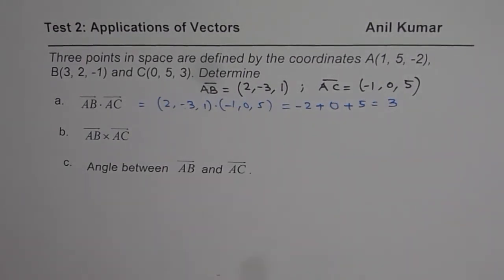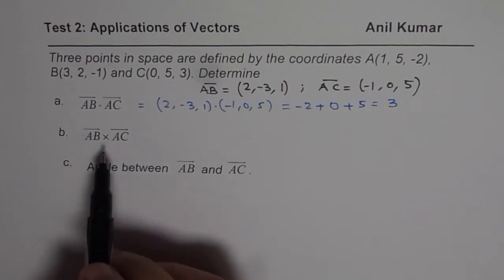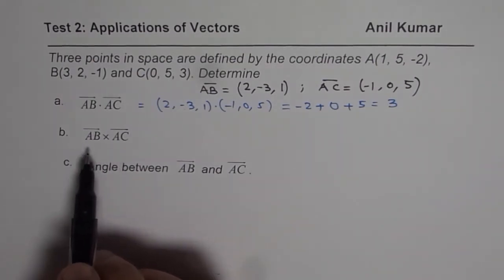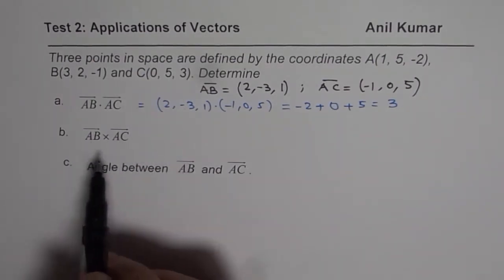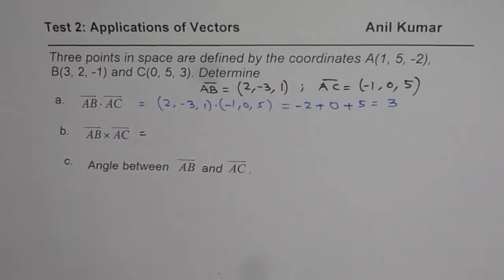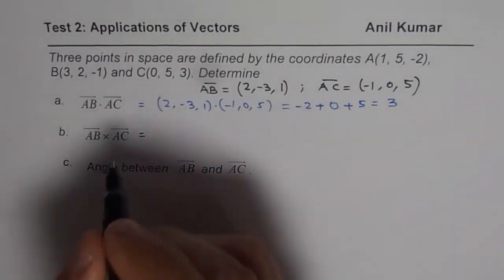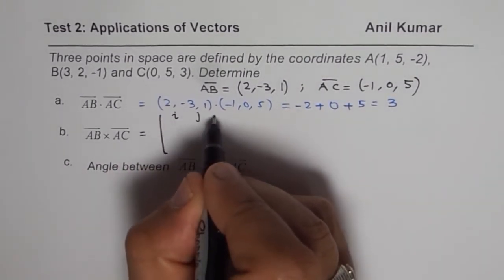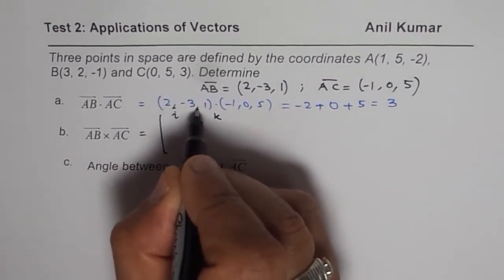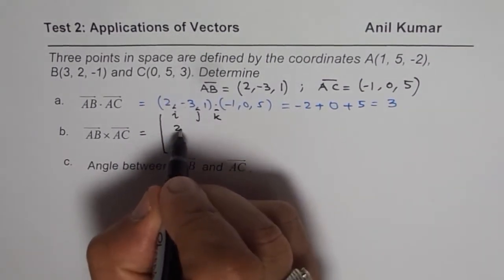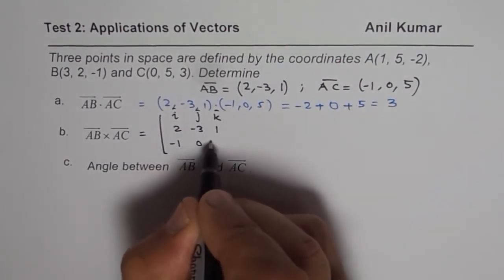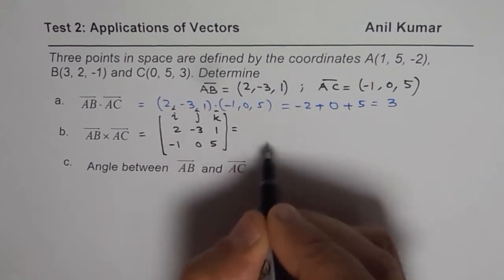Now let us see how to find the cross product. I kind of changed the question. In the question, it was cross product between AB and BC, but it doesn't really matter. So here, you need to know how to do dot product and cross product. I will use the method for matrix to find the cross product. We can write i, j, k. So these are the unit vectors, and AB is (2, -3, 1). AC is (-1, 0, 5).